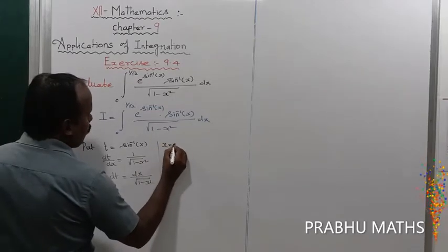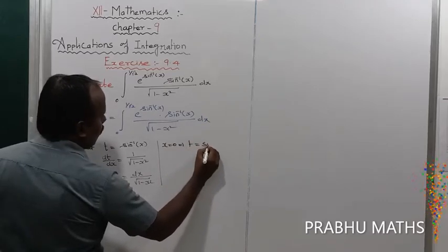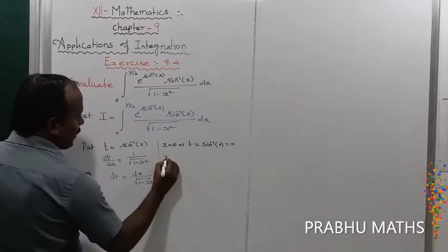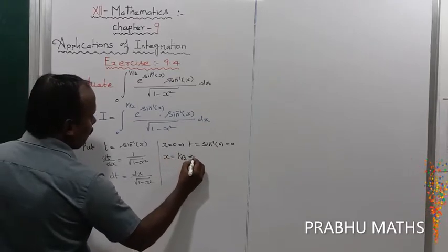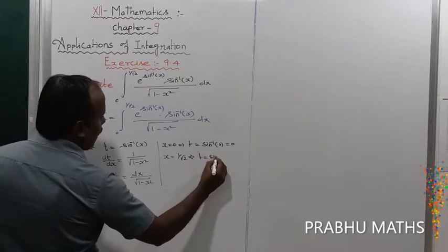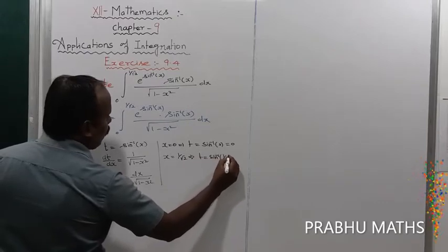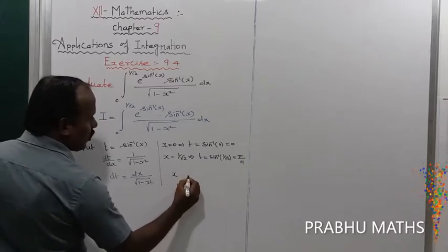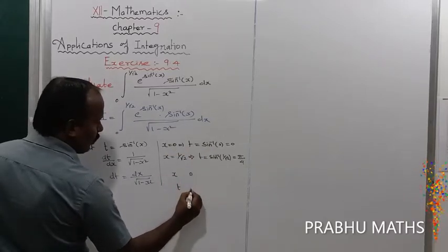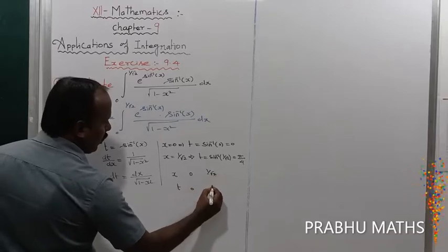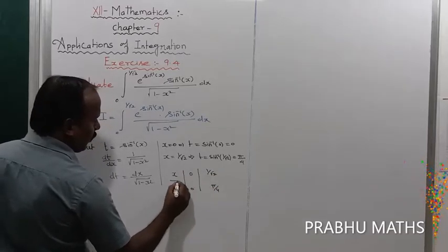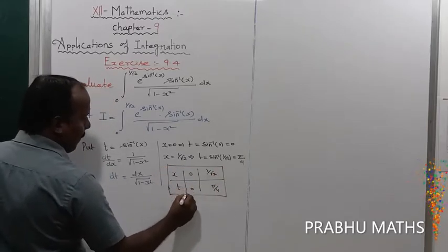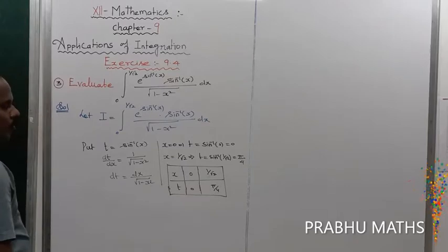Now when x equals 0, t equals sin inverse of 0, which equals 0. When x equals 1 by root 2, t equals sin inverse of 1 by root 2, which equals pi by 4. So the new limits are x: 0 to 1 by root 2, corresponding to t: 0 to pi by 4.